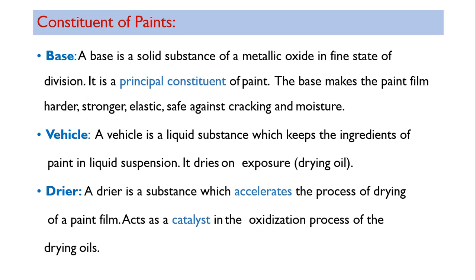Next is vehicle. A vehicle is a liquid substance which keeps the ingredients of paint in liquid suspension. It dries on exposure to air. Normally, when a tin of paint is left open it will get dried, which is why tin caps are properly sealed during storage.